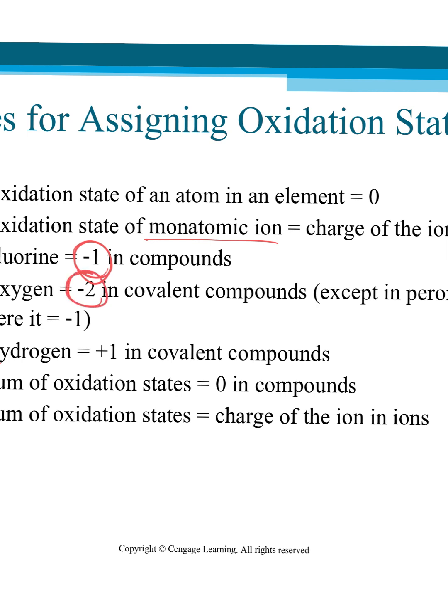Oxygen will always have an oxidation number of negative two, as long as it's in a covalent compound. It says except in peroxides, which those aren't something we see very often, so don't worry about that. And then hydrogen is always a plus one in covalent compounds. If it would be bonded with a metal, then it would be a minus one. But we won't see that super often.